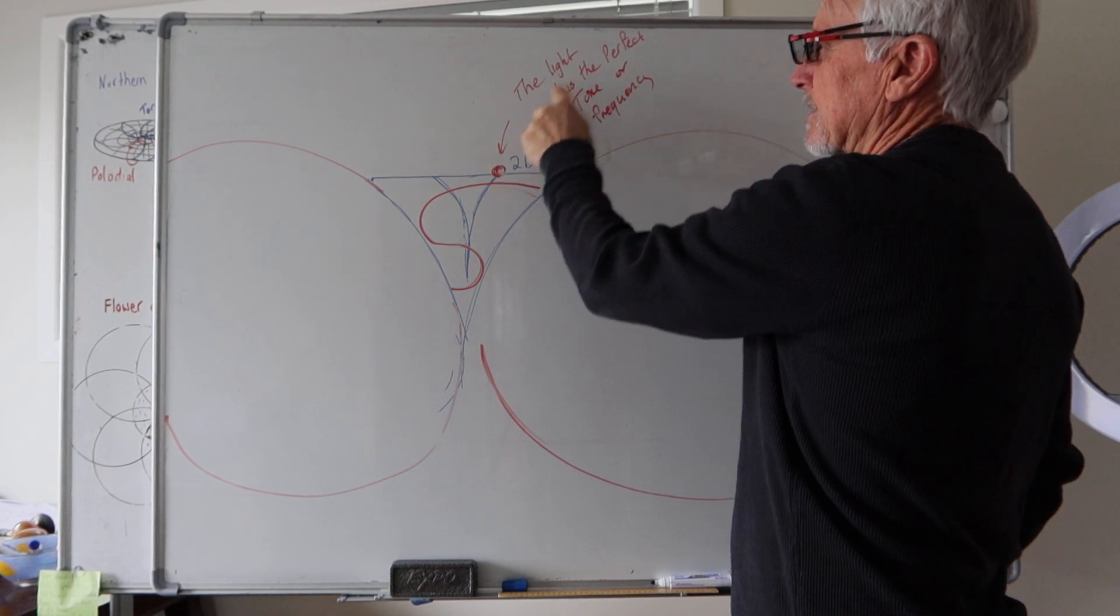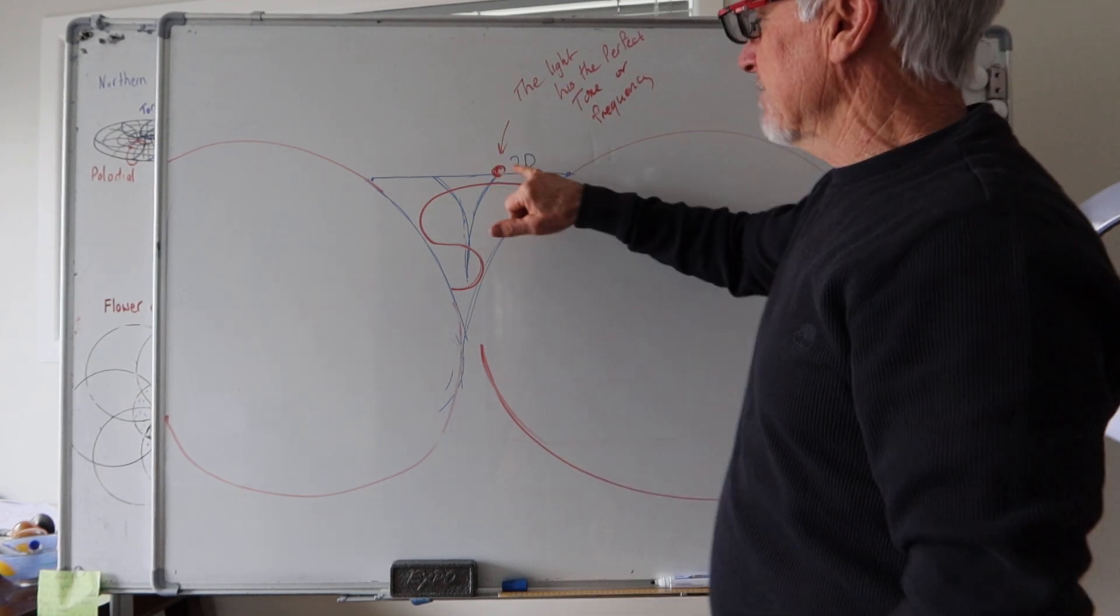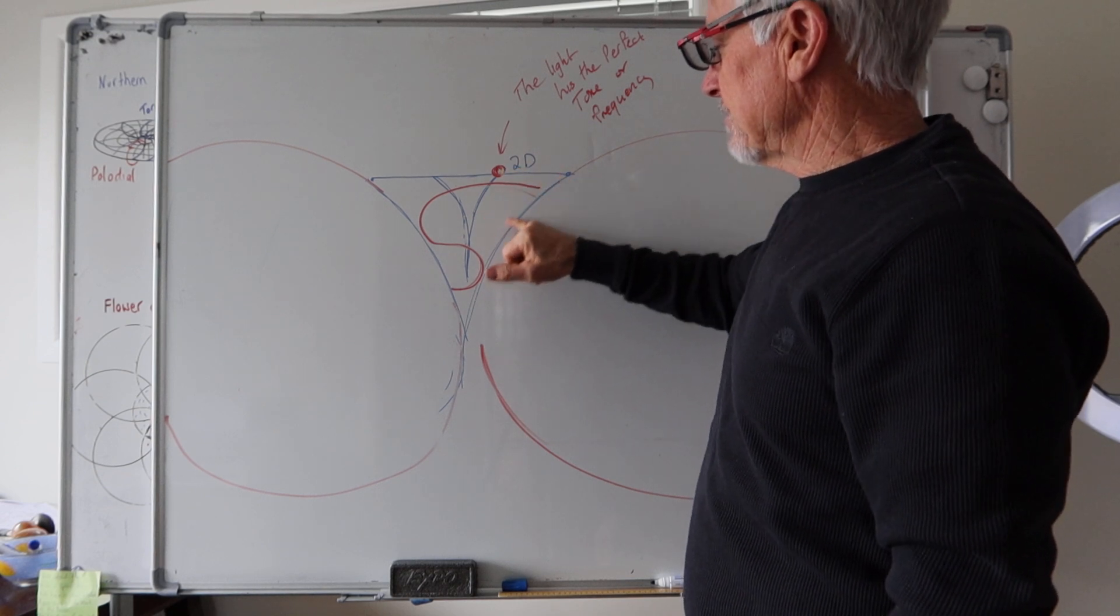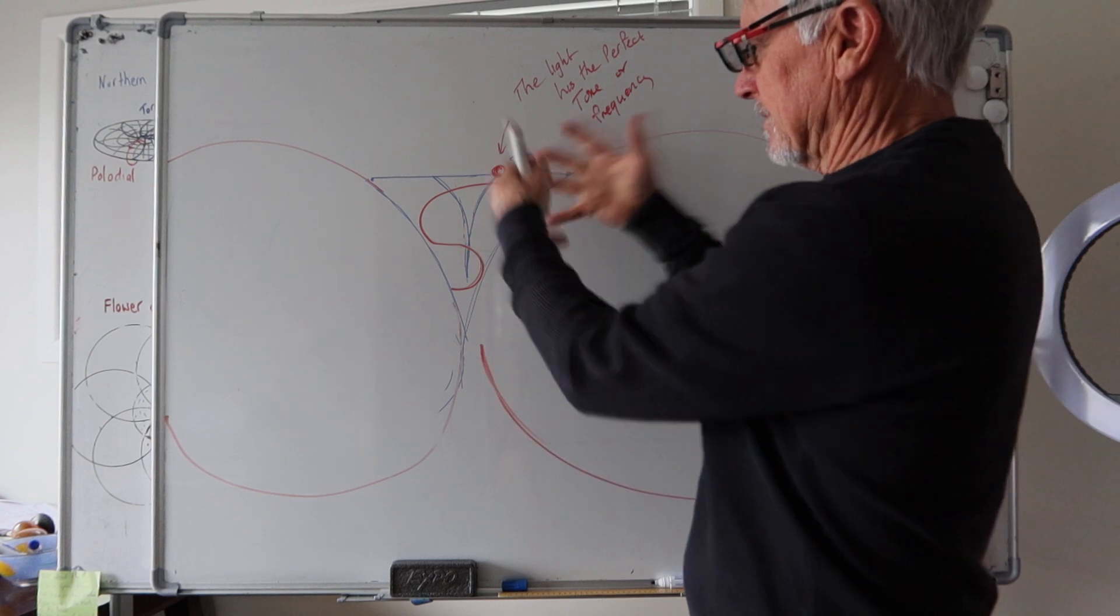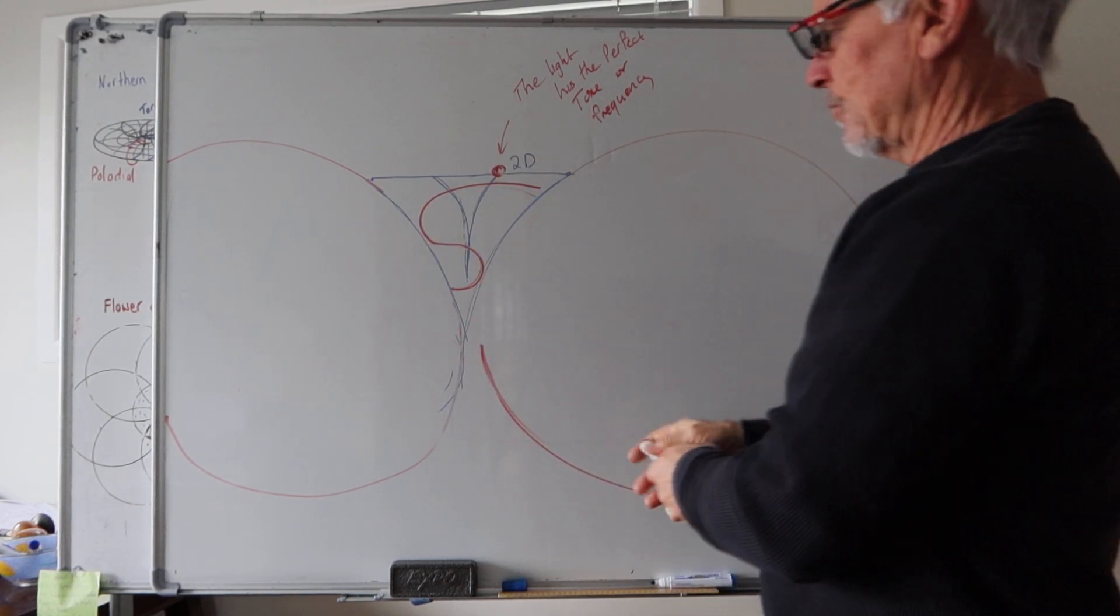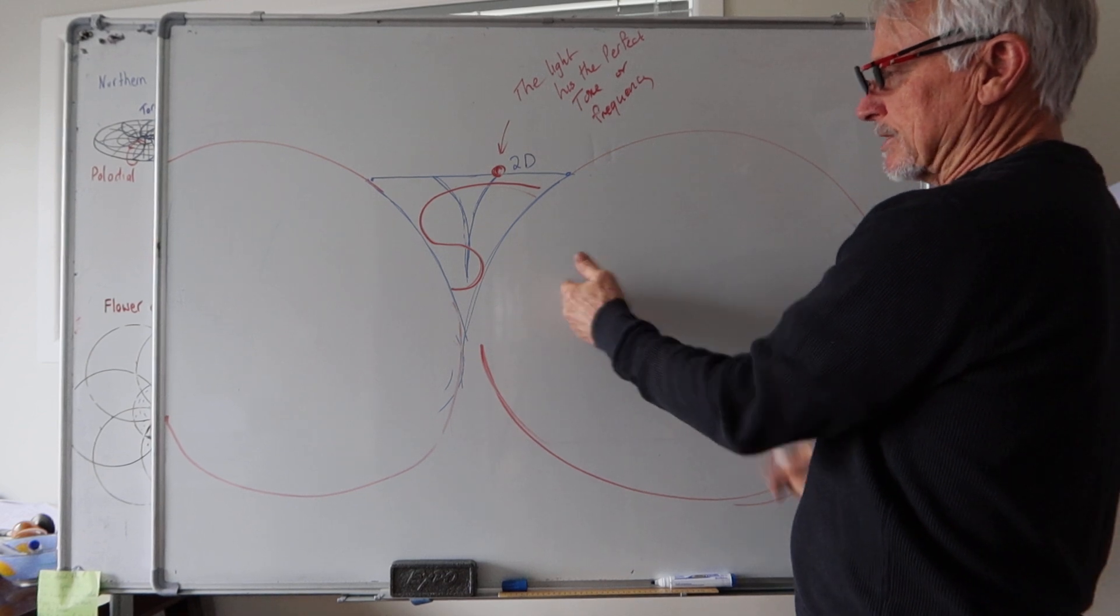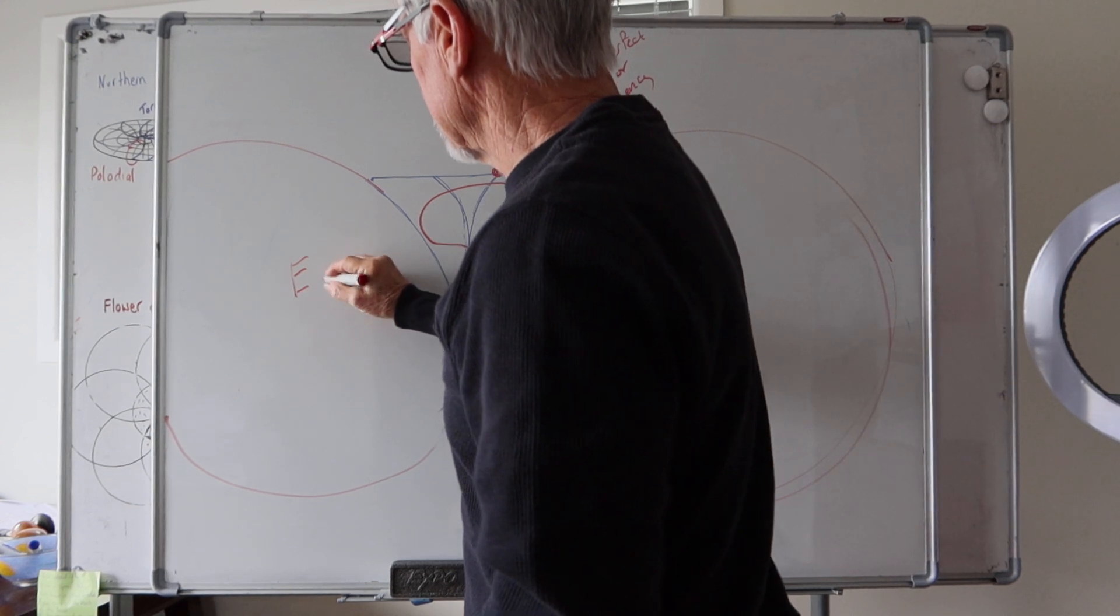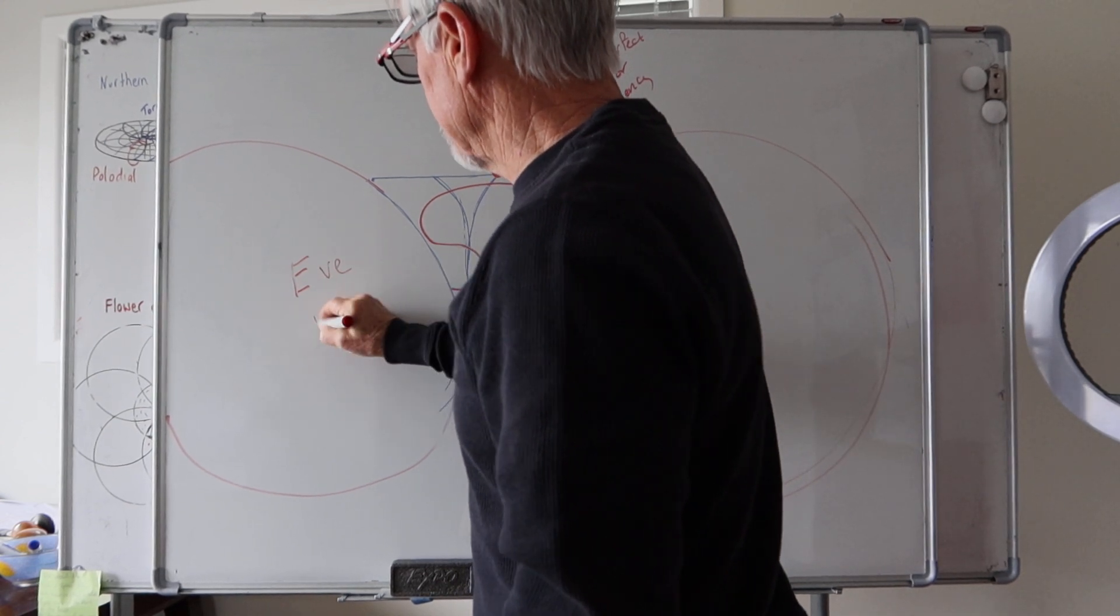And out comes the female, the split. That's the whole Eve story, the rib cage. Well, they mention the ribs, not just a rib - it's the rib cage, it's that even split. There's Eve, you could say Eve is even.